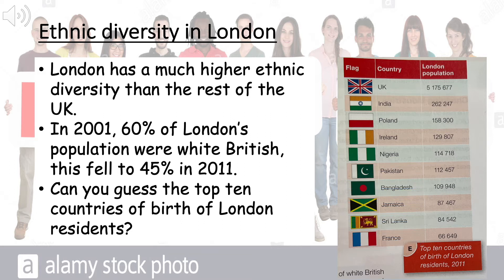So first of all, London has a much higher ethnic diversity than the rest of the UK. In the UK, about 13% of the population were born in another country. In London, this value is about 37%.